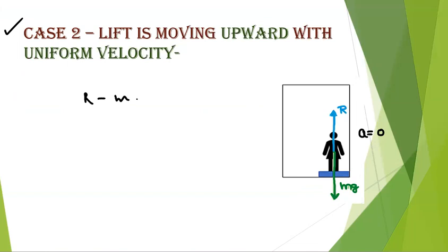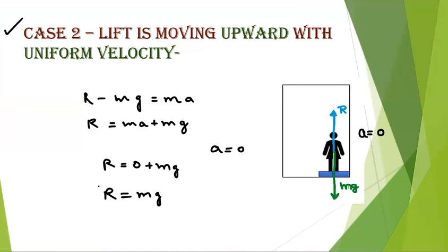Again you will write it as R minus Mg equals MA, or R equals MA plus Mg. For uniform velocity, acceleration is zero. So R will be zero plus Mg. And apparent weight R will be equal to the weight of person.